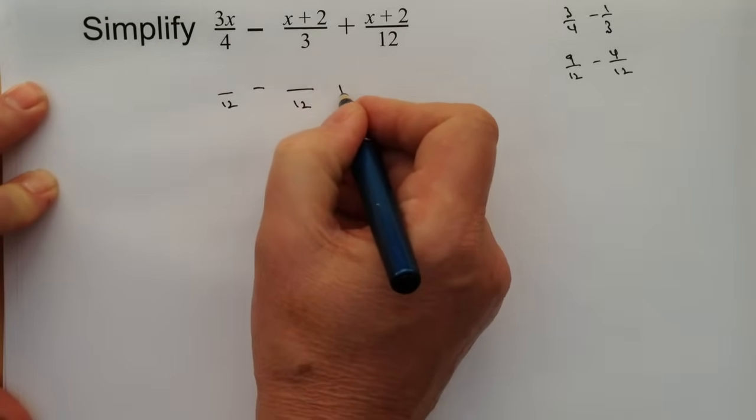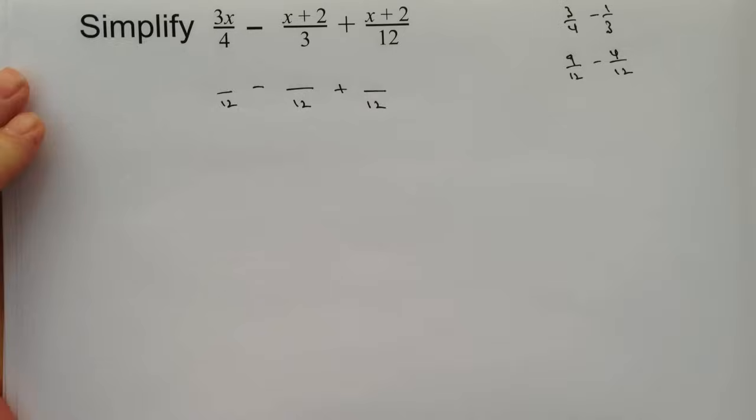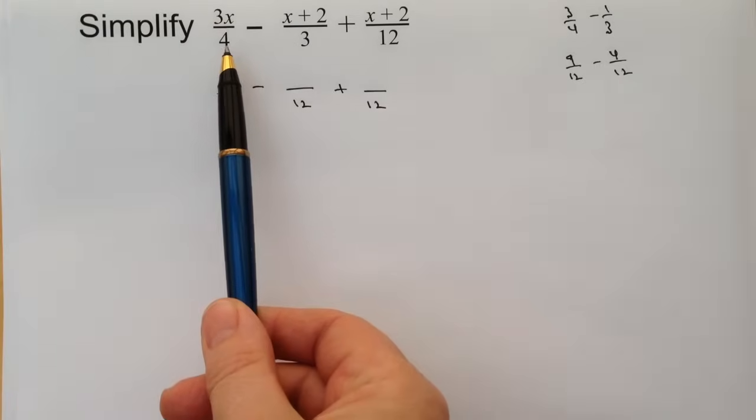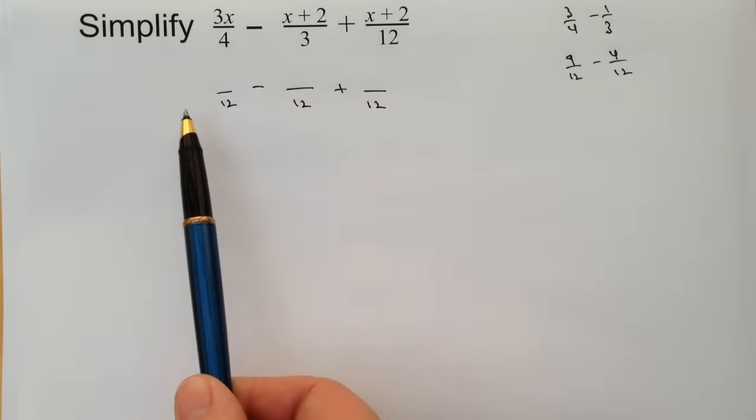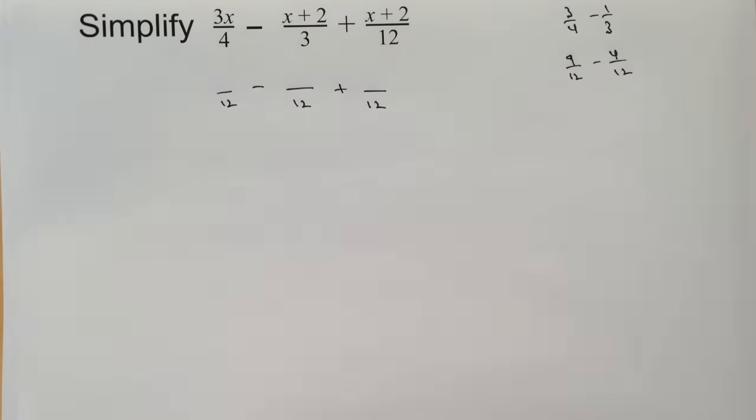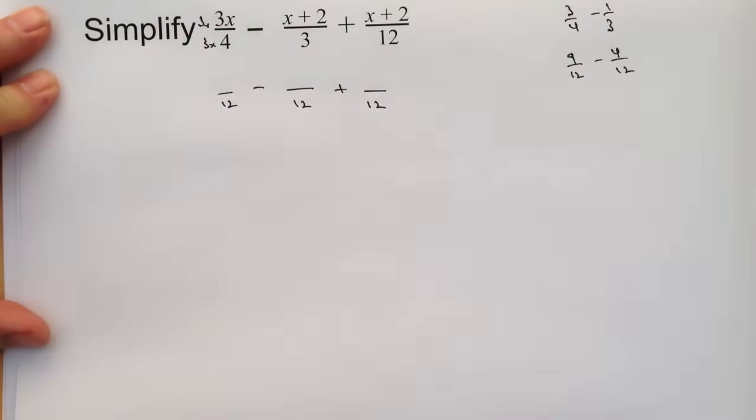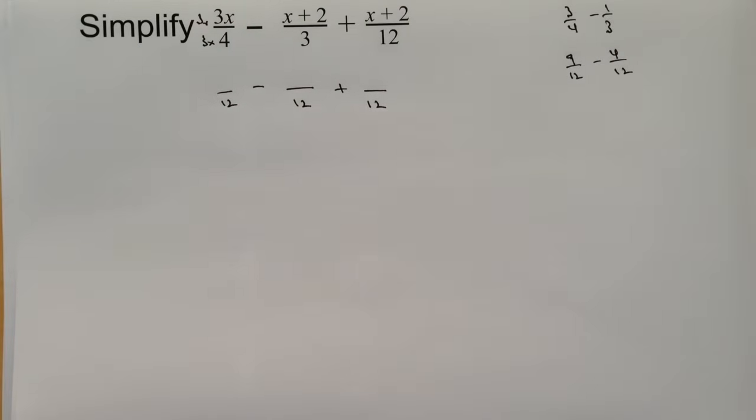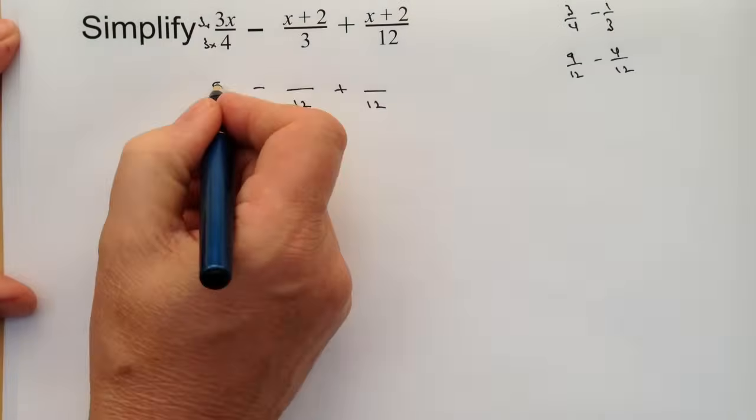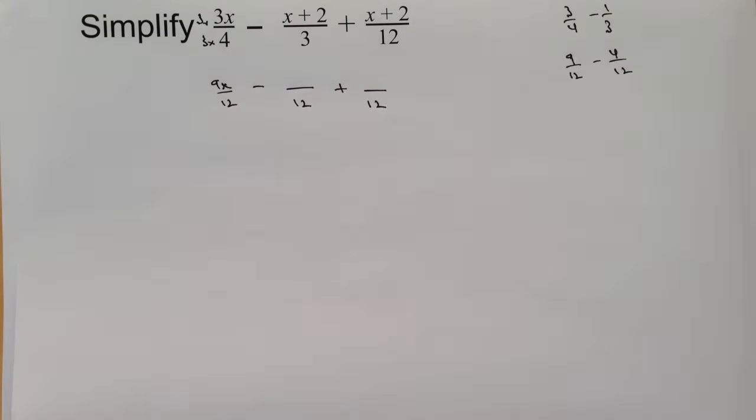The question is what have we done to 4? How many times we multiplied 4 to get to 12? We've multiplied that by 3 times, so we're going to do exactly the same with the top. If we multiply that 4 by 3, then we're going to multiply the top by 3, so that's going to give us 9x over 12.